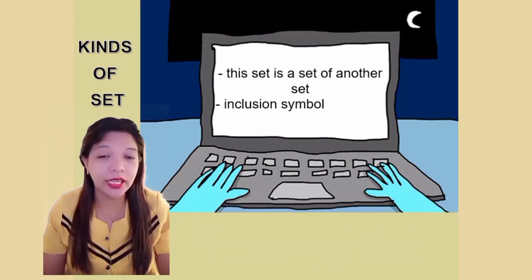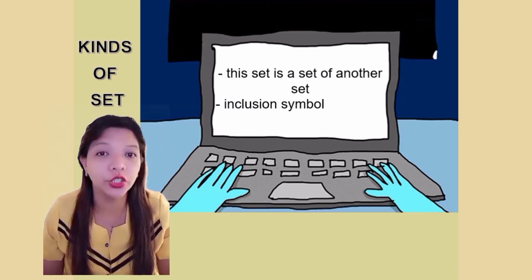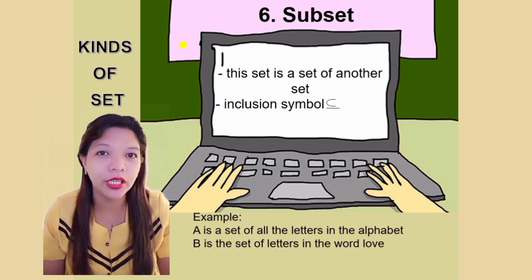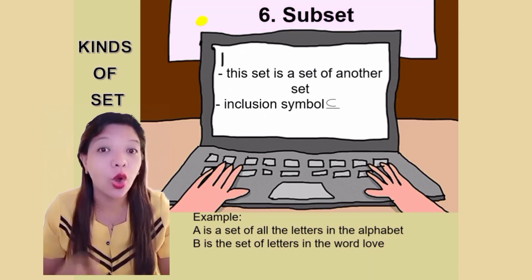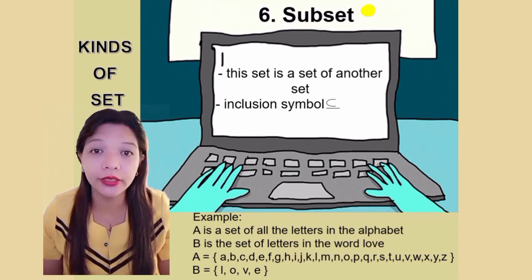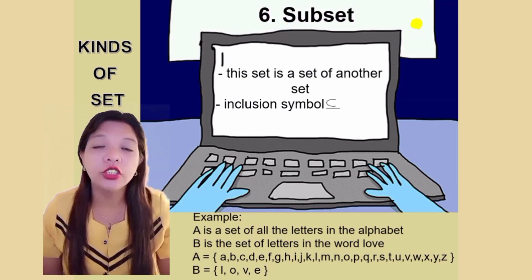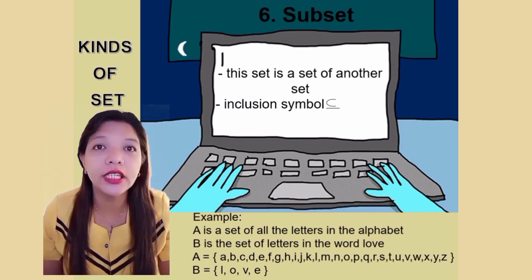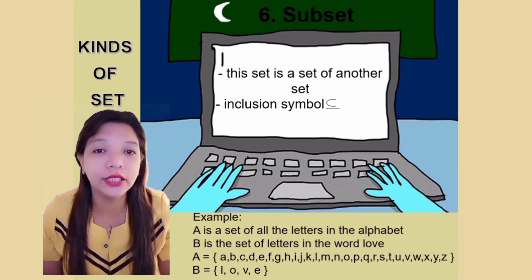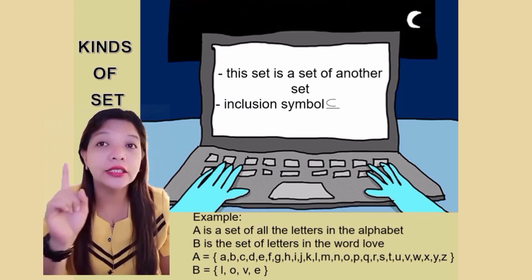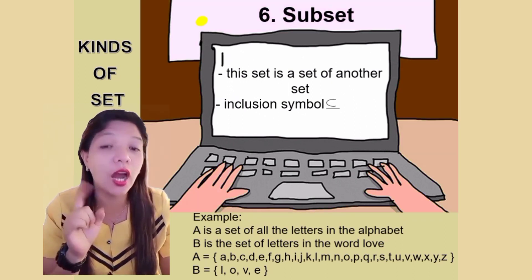Number six. Subset. It is the set of another set or part of another set. We use this symbol, inclusion symbol, to represent a subset. Let's have our example. Set A is a set of all letters in the alphabet. While set B is a set of all letters in the word love. B is a subset of A. Example, A is equal to open brace A, B, C, D, E, F, G, H, I, J, K, L, M, N, O, P, Q, R, S, C, U, V, W, X, Y, Z, close brace. While set B is equal to open brace L, O, V, E. Meaning, set B or the elements of set B are part of set A.